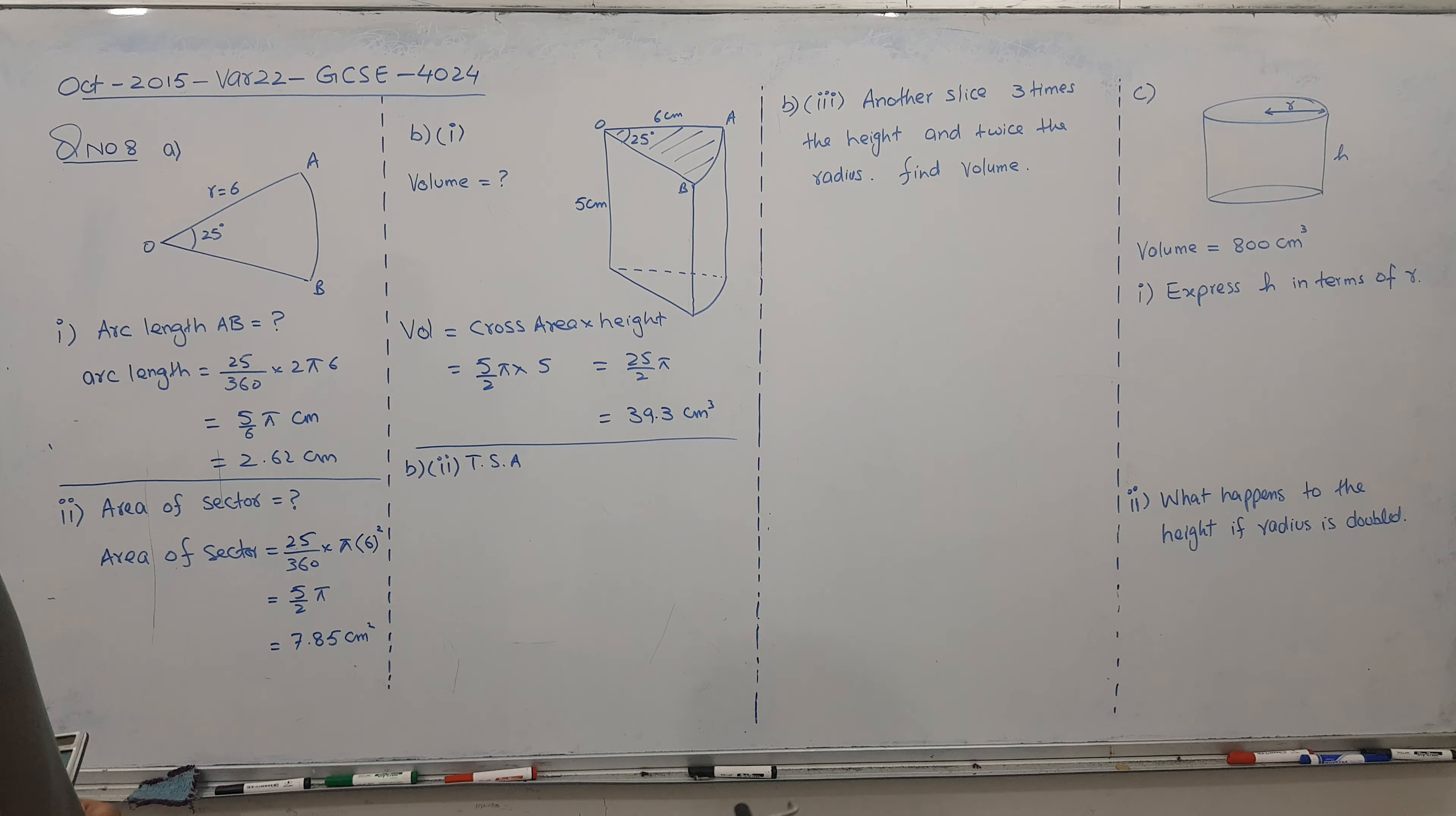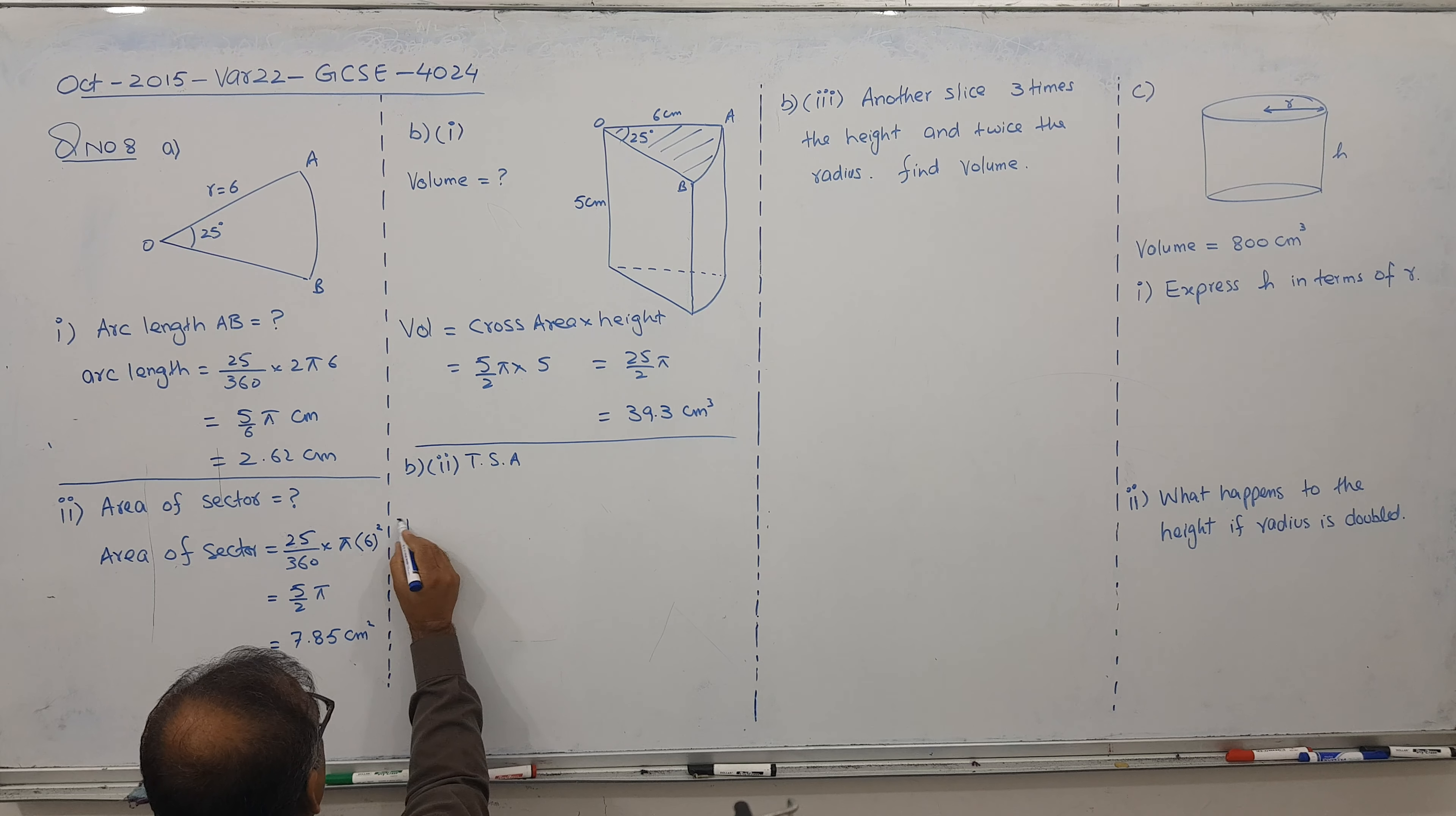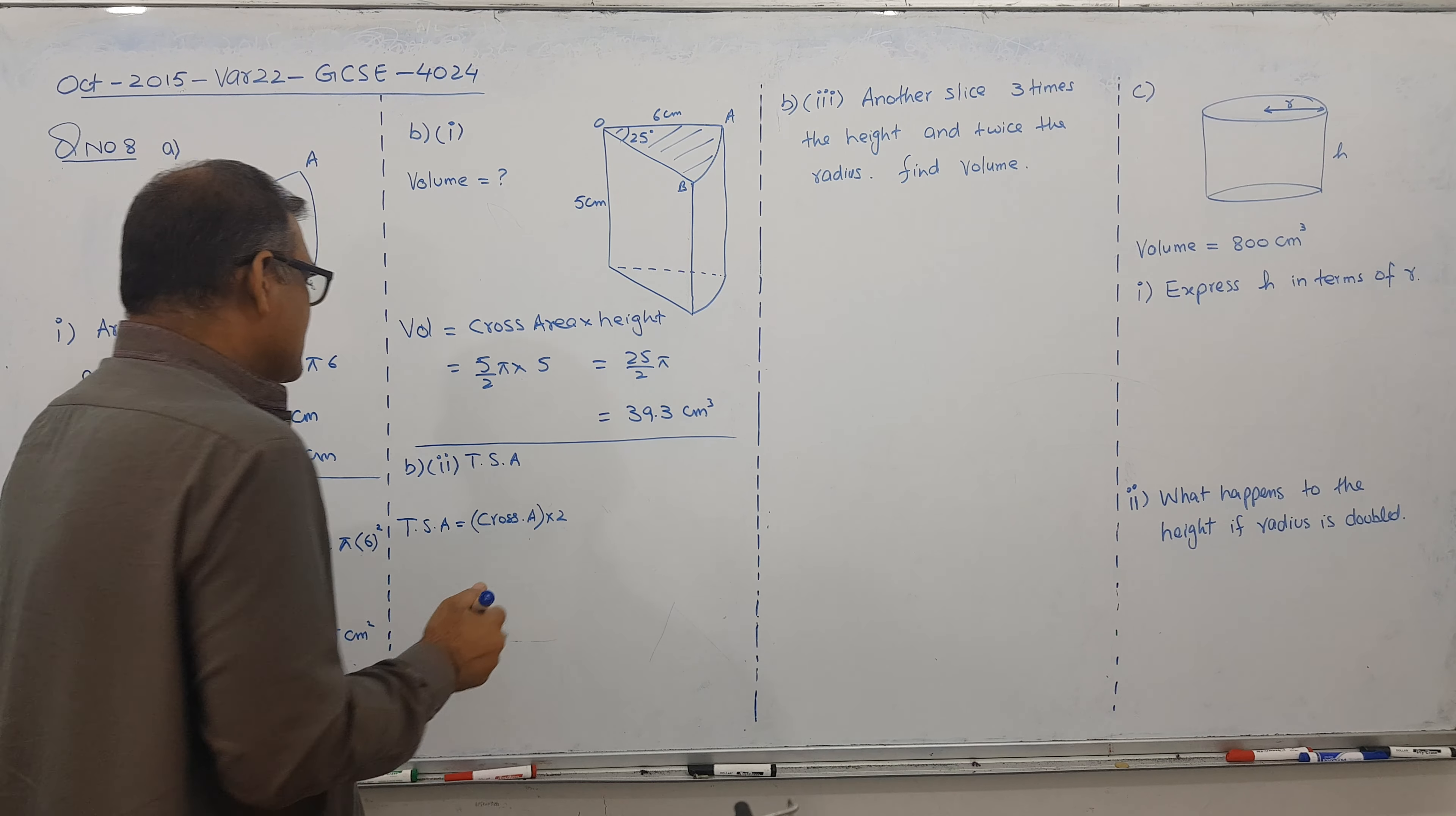And let's go for the next part. And next part is TSA. Total surface area. So up and down. So plus.